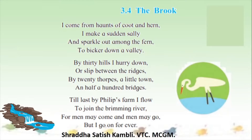You can open your English textbooks and read with me. So the name of the lesson is 3.4, The Brook. The first line: 'I come from haunts of coot and hern.' Now coot and hern are types of water birds. Haunts means gatherings — there are lots of these birds.